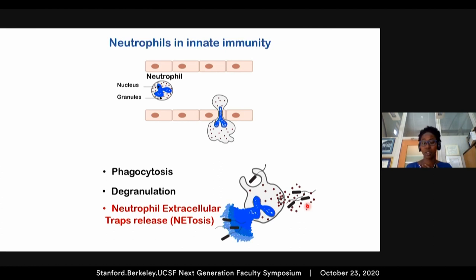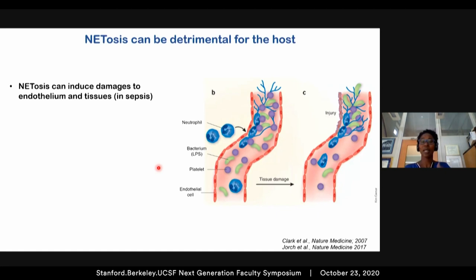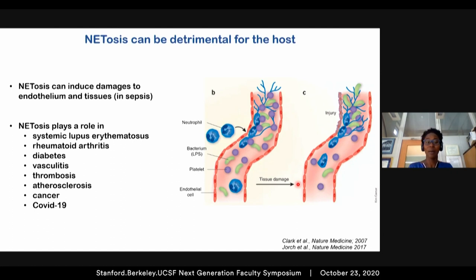NETs are DNA decorated with proteins — histones and antimicrobial proteins — that can physically trap a pathogen. As we can see here, these yeasts are wrapped in this meshwork of DNA. NETs were shown to limit bacterial growth in vivo, and their antimicrobial capacity requires the DNA scaffold and histones, suggesting NETosis is important for innate immunity. However, NETosis can also be detrimental to the host. In the case of sepsis, high release of NETs leads to endothelial cell death and tissue damage, and NETosis is increasingly implicated in inflammation-related diseases such as diabetes, cancer, and COVID-19.